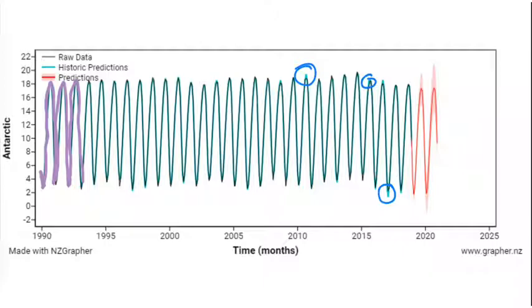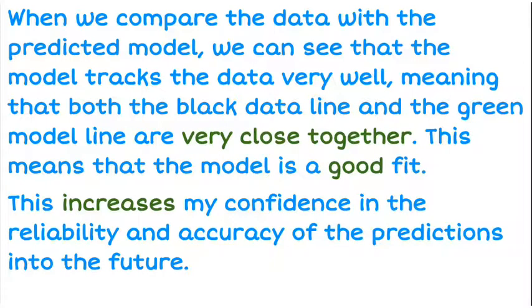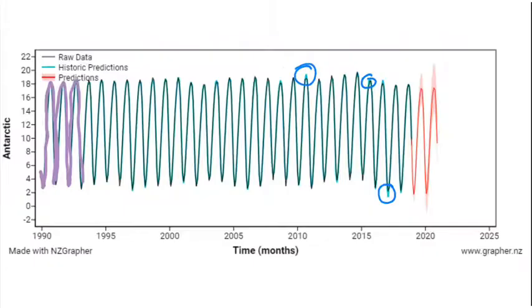So this is what we want to be able to discuss. We can talk about how the model tracks the data very well. We're talking about the model tracking, so that's talking about our black line as the data, and that greenish blue line is following the black line very well indeed.